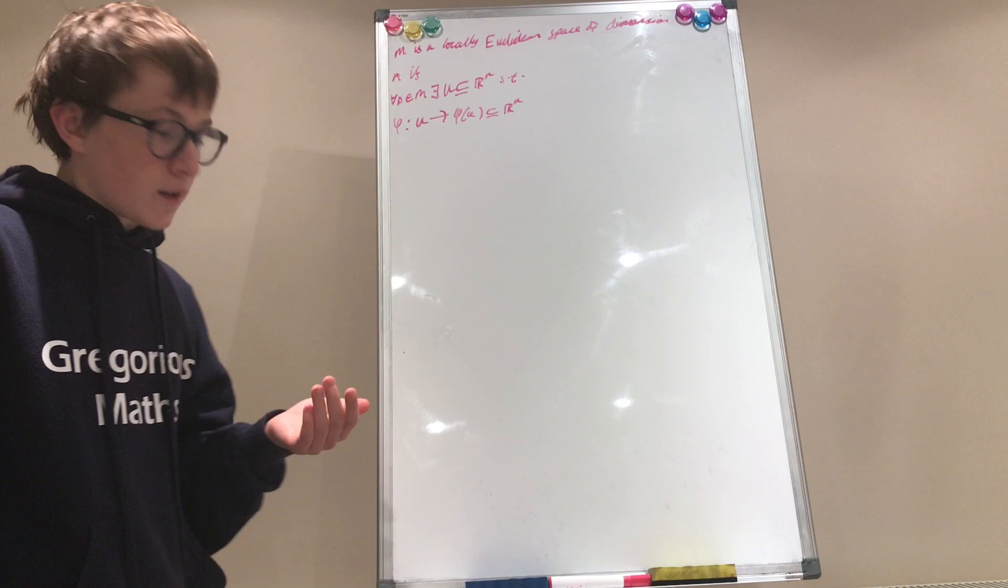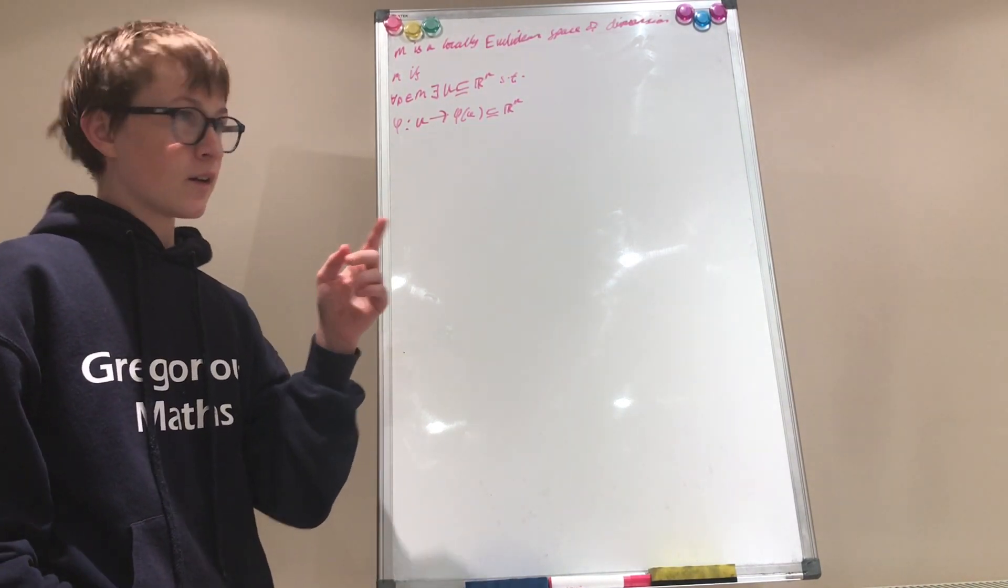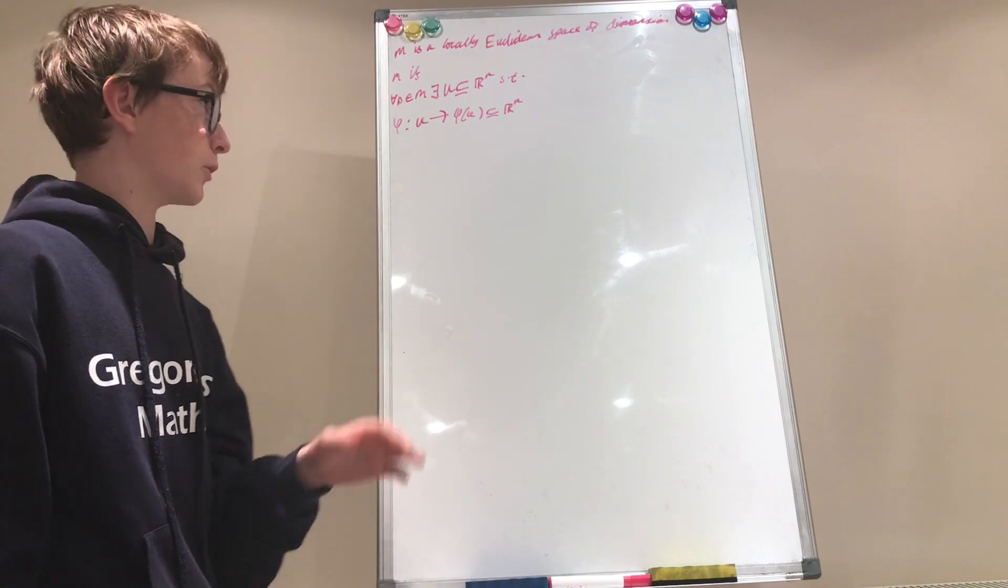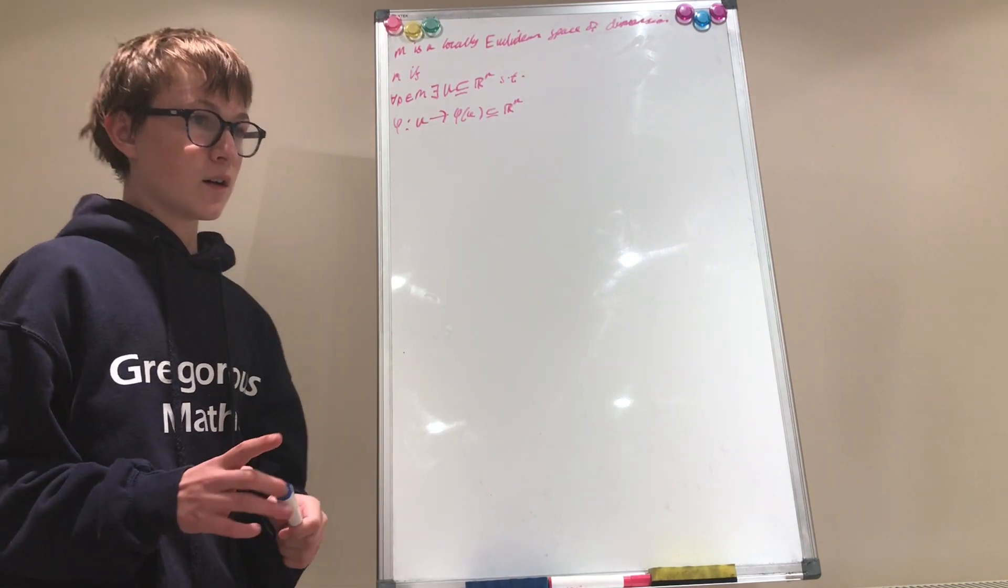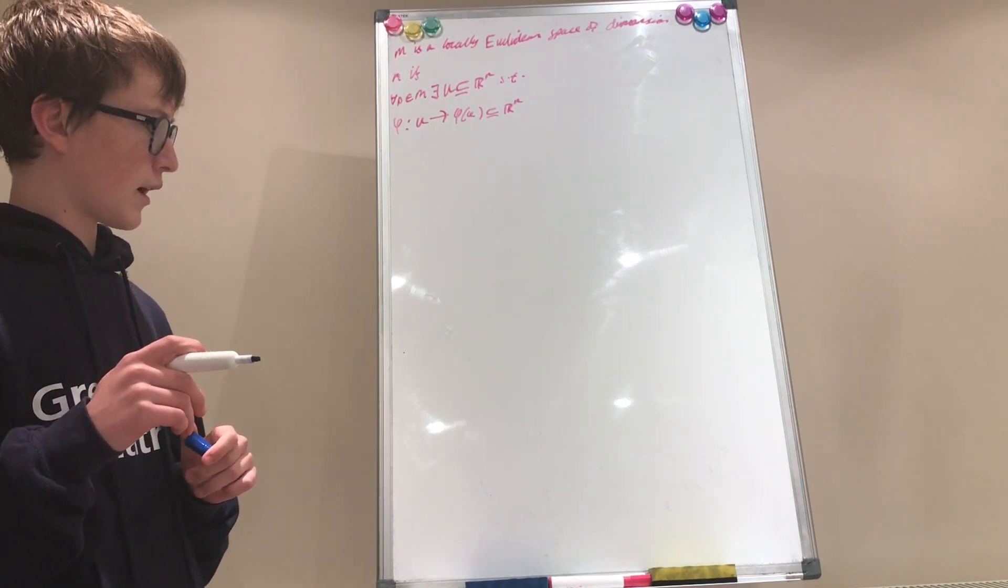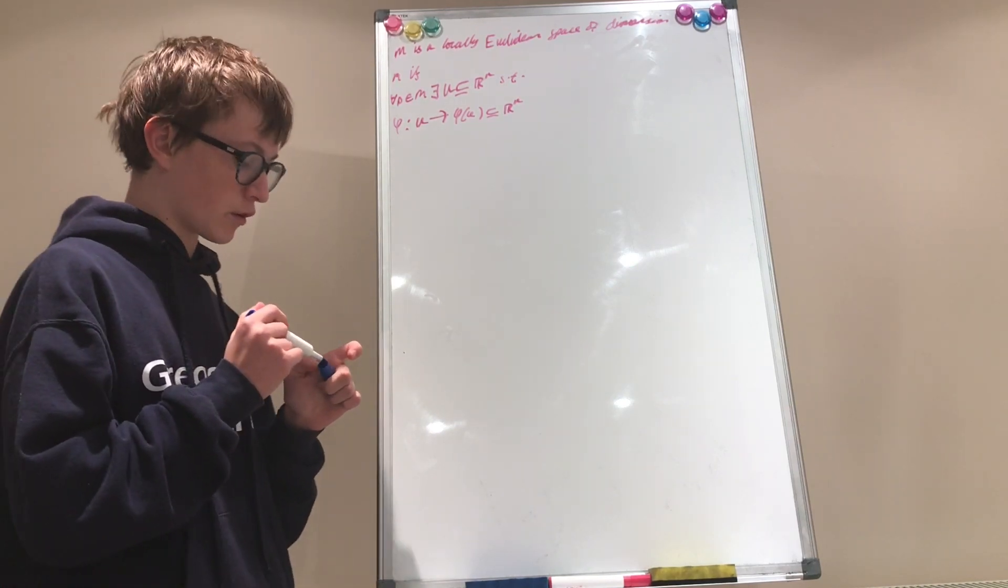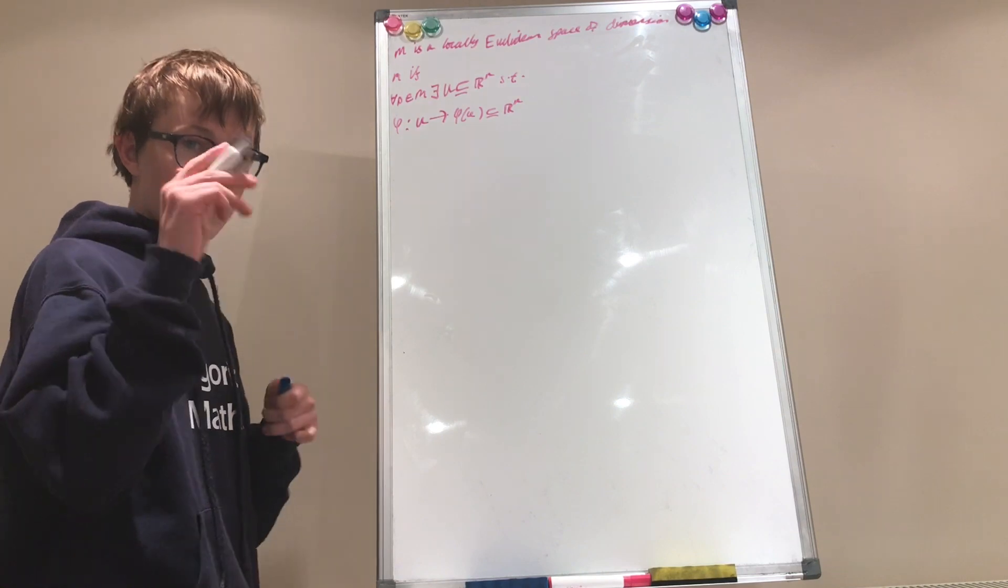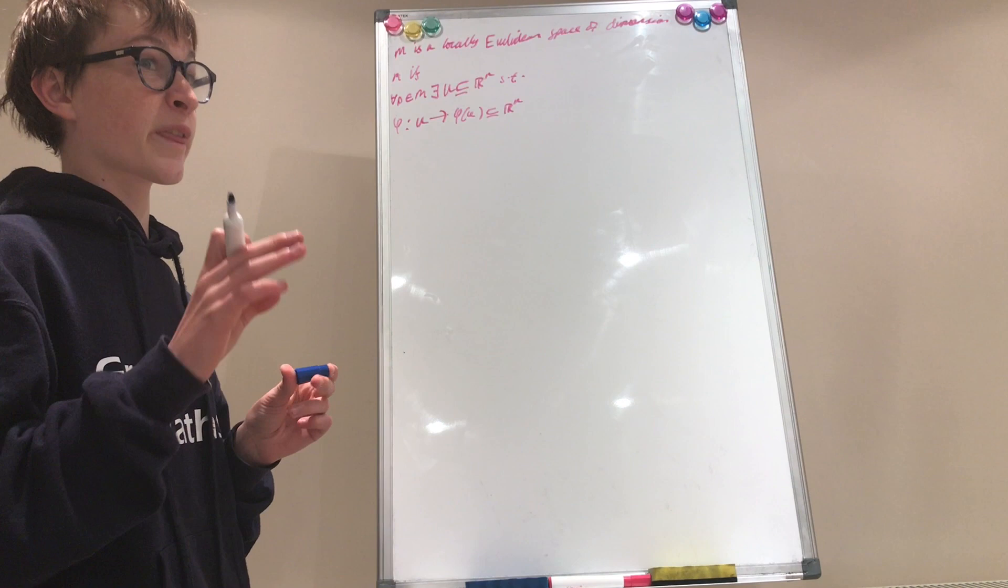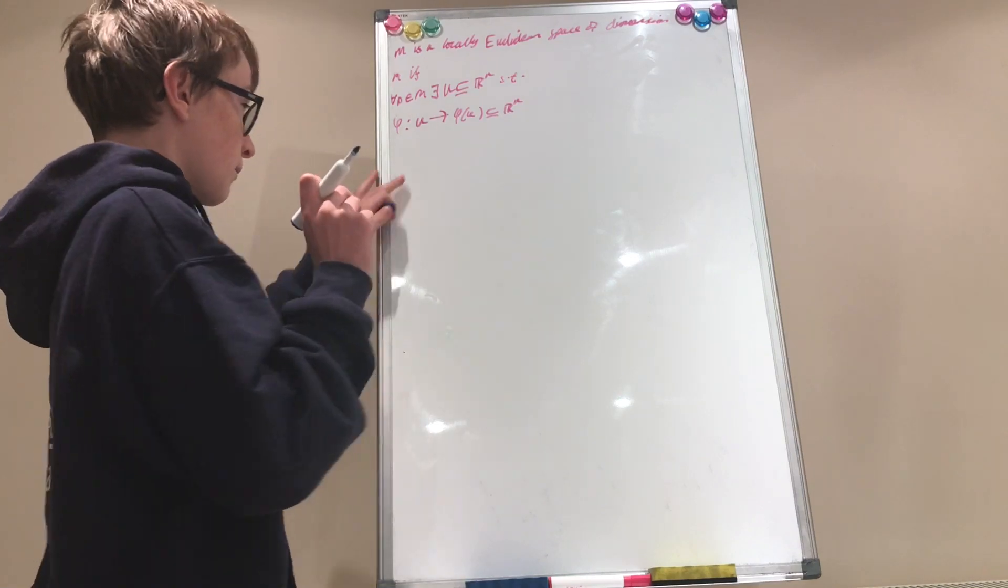Now, if you don't understand what any of the terms in this definition mean, including homeomorphism, they'll all be somewhere within my topology series. I define what a Hausdorff space is in topology 1.6, if you don't know what it means. And I define a basis in 1.3, I think is where I define what basis is. But anyway,